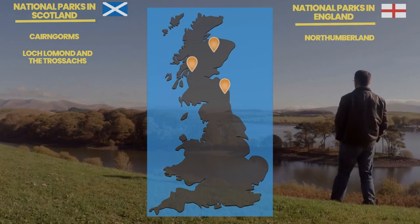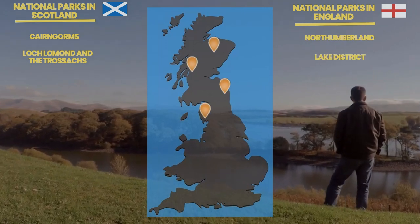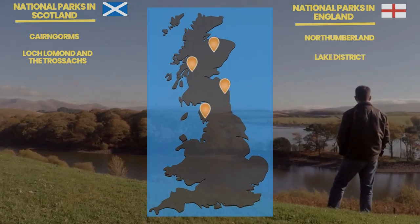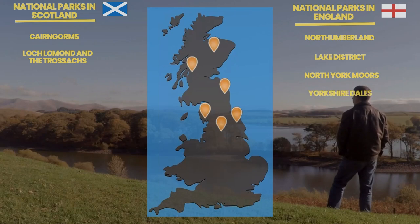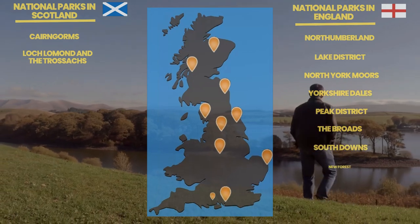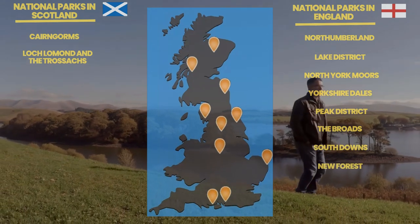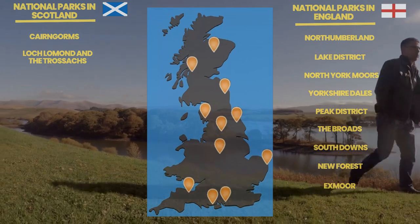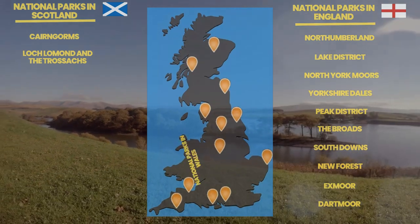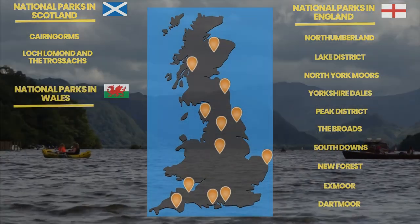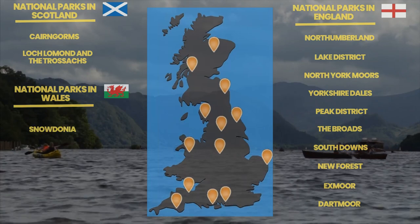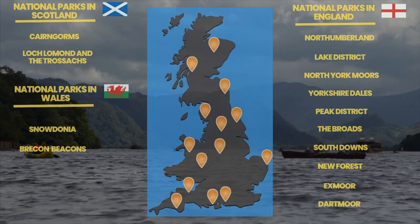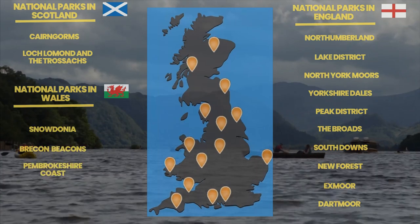National parks in England include Northumberland, Lake District, North York Moors, Yorkshire Dales, Peak District, the Broads, South Downs, New Forest, Exmoor, and Dartmoor. National parks in Wales are Snowdonia, Brecon Beacons, and Pembrokeshire Coast.